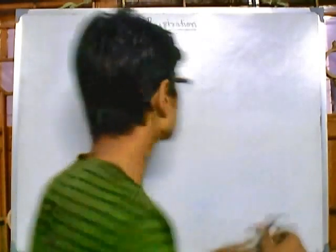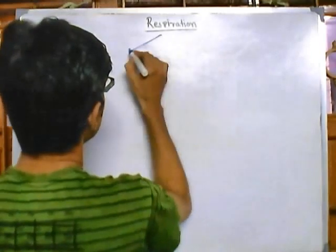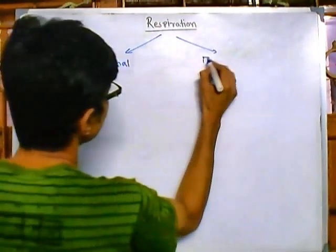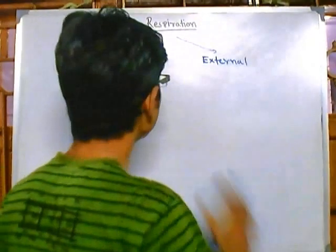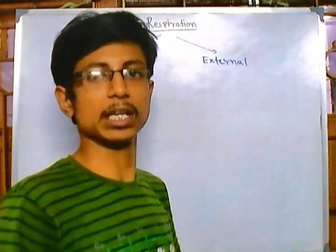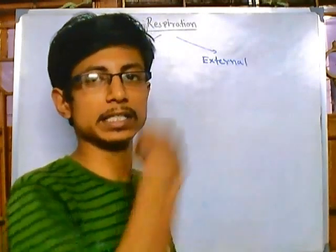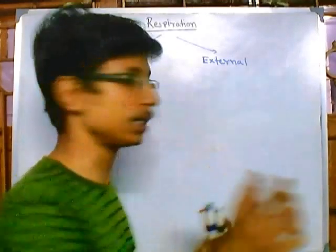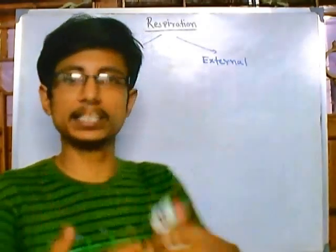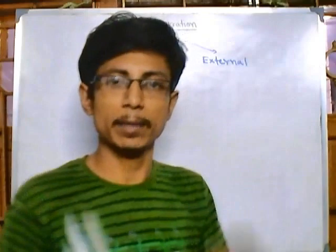Respiration is carried out in two different ways: one is internal respiration and another is external respiration. This is very important — respiration actually occurs in two different sections. The respiration you might already know — using lungs, taking in oxygen and releasing carbon dioxide — that is external respiration, and it occurs at a macro scale.